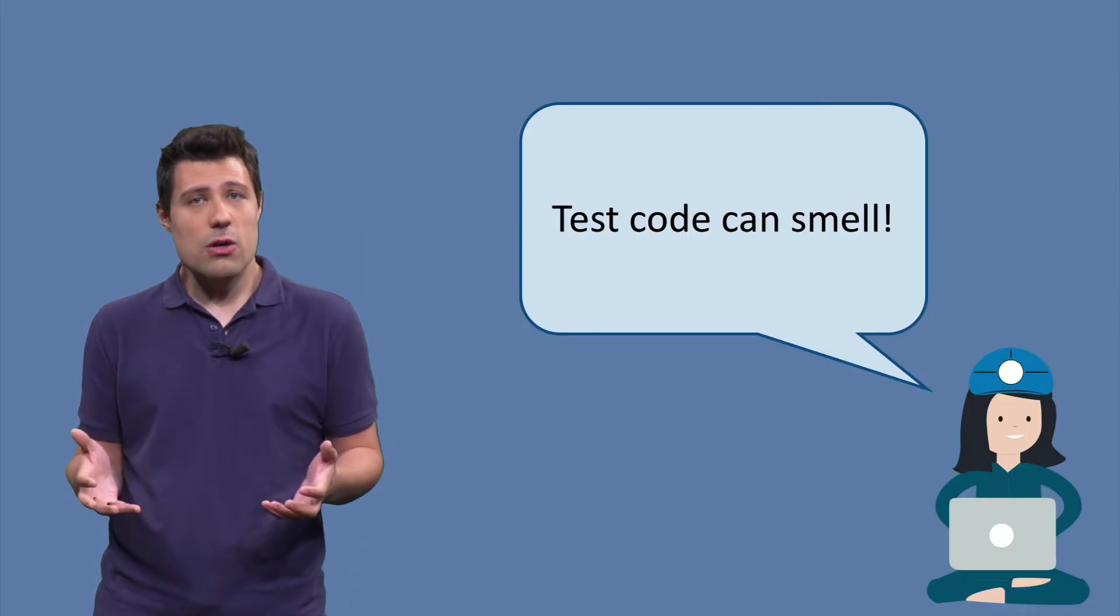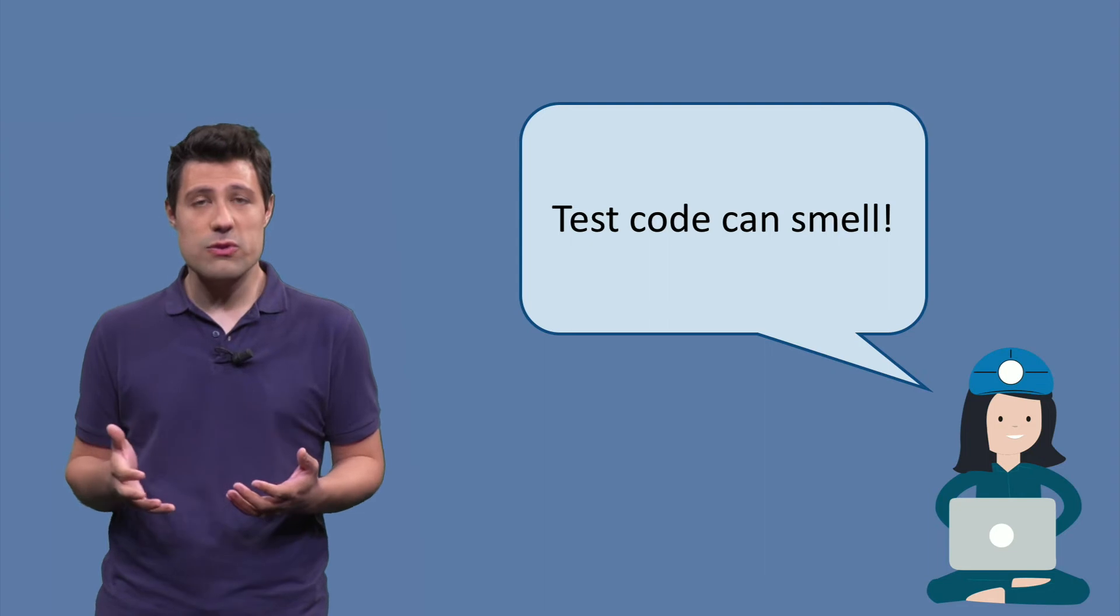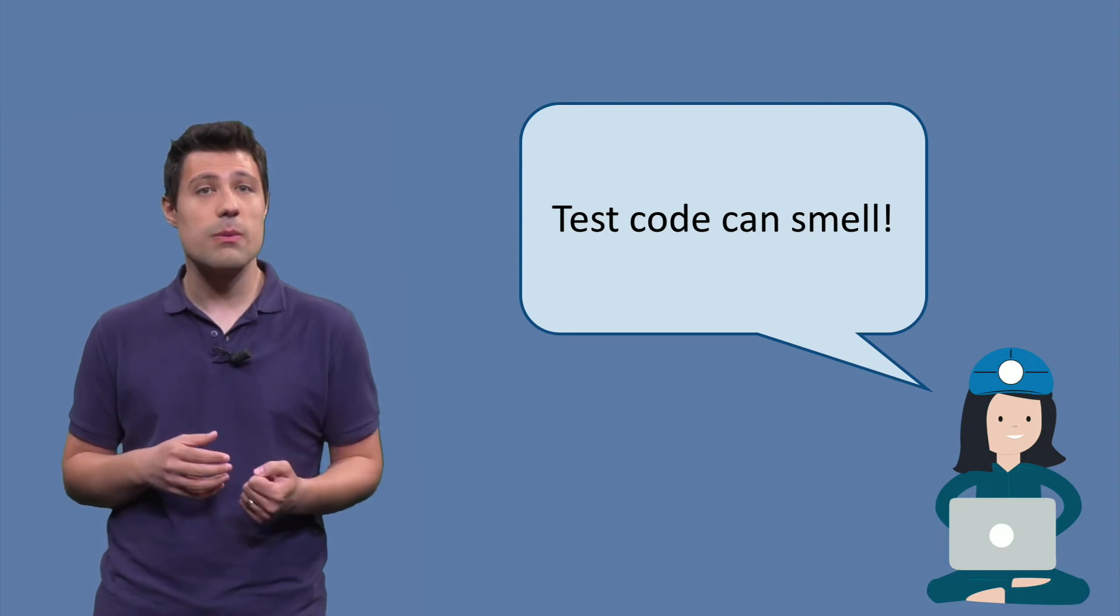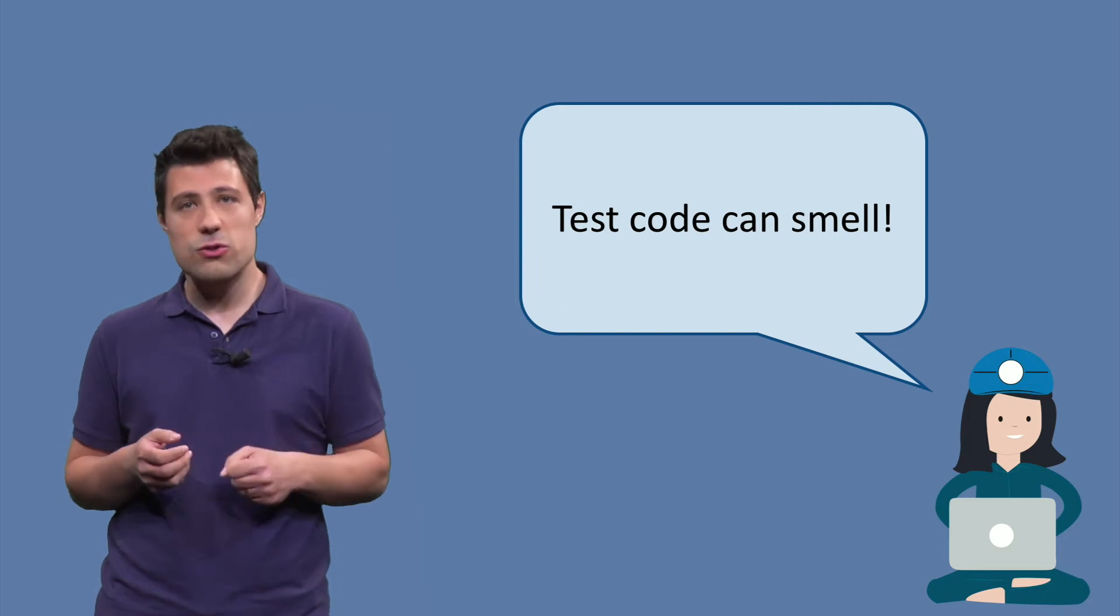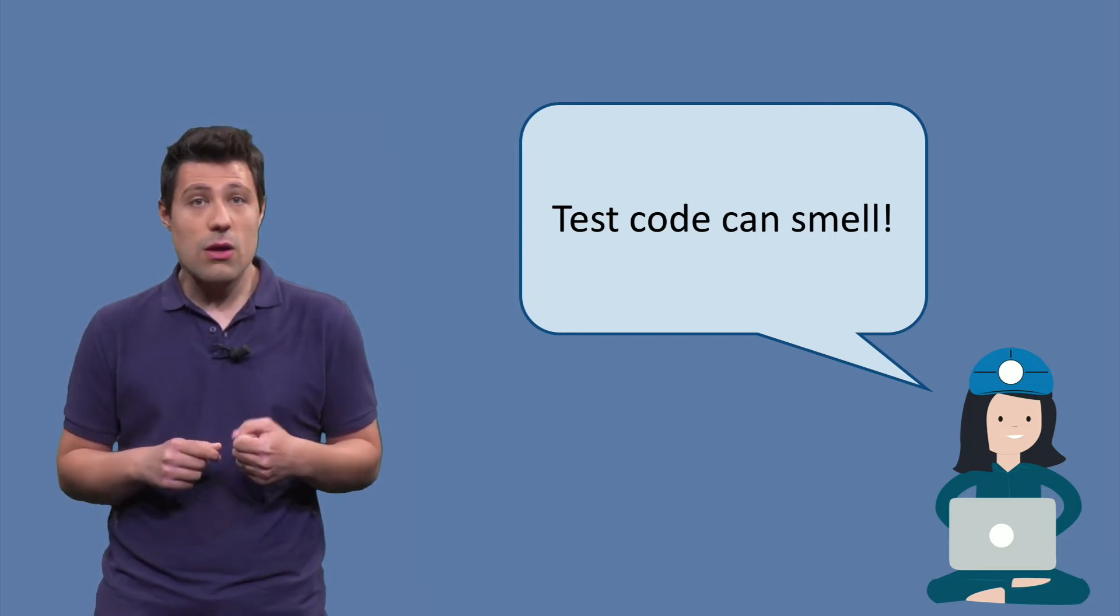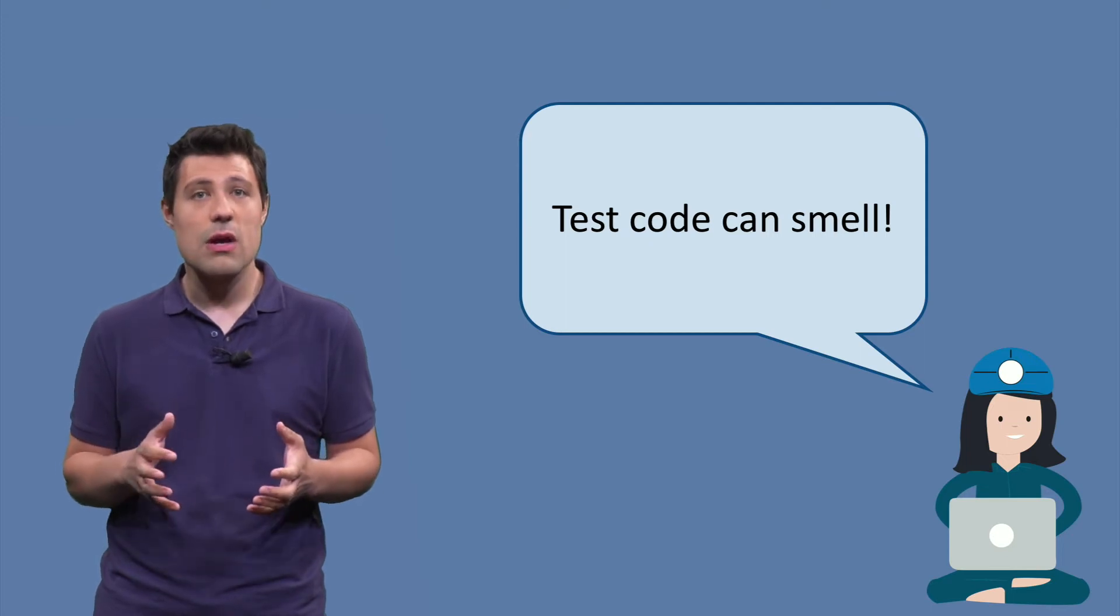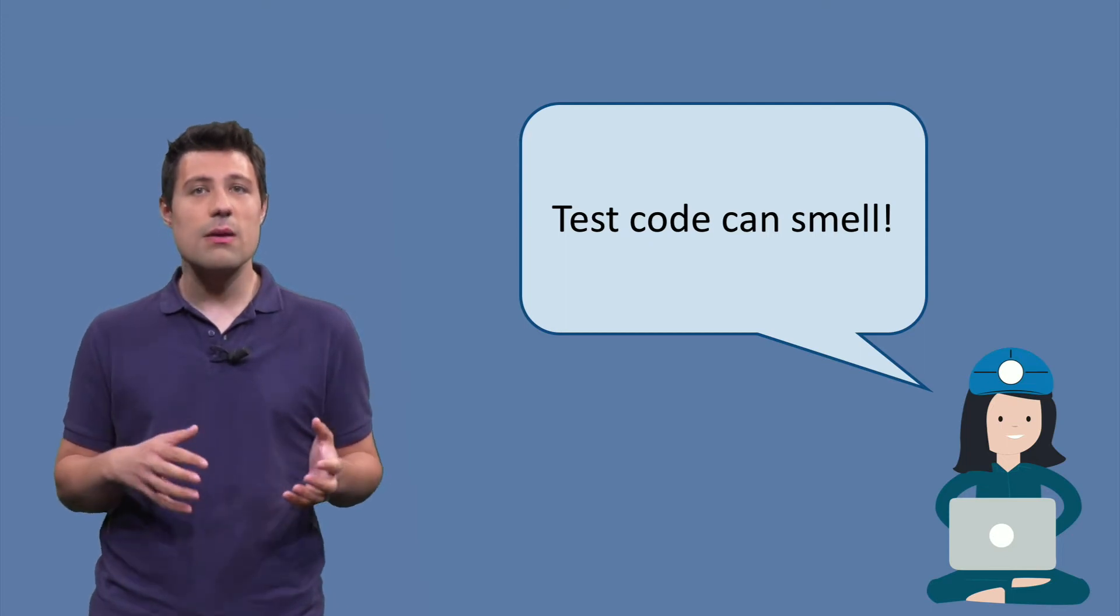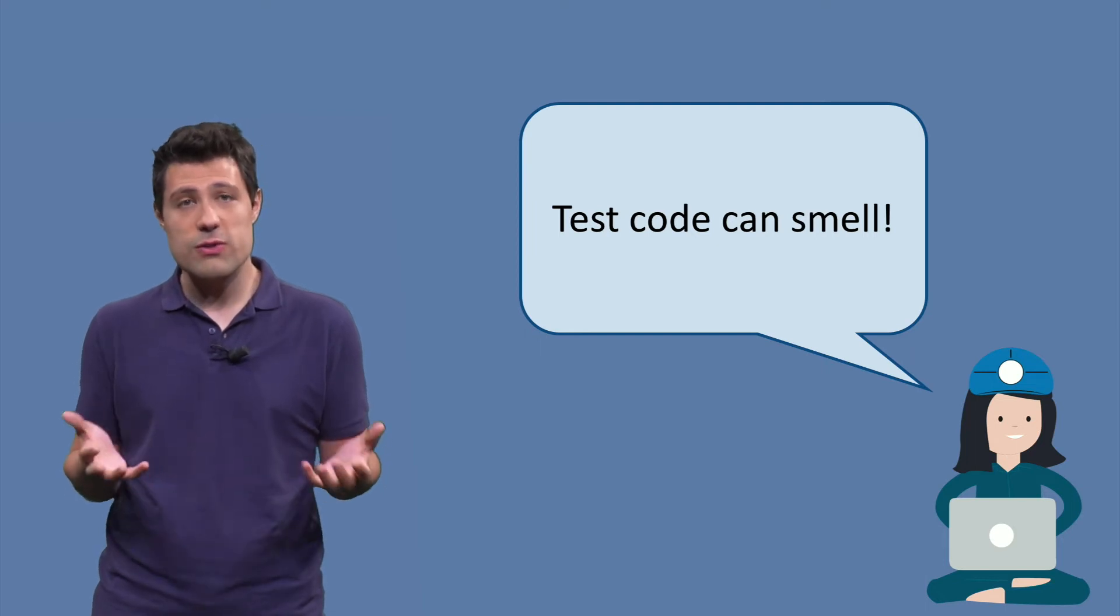In production code, we often use the term code smells to refer to indications or symptoms that usually point to a deeper problem in the system. Examples of well-known code smells are long methods or long classes. Lots of research has already shown that code smells can definitely hinder the comprehensibility and the maintainability of software systems. So, we should try to avoid code smells as much as possible.